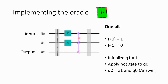For that we use this quantum gate called CSWAP, which does something very similar to an AND gate. It takes q0 and q1, ANDs them, and the result of q0 AND q1 will be in q2.